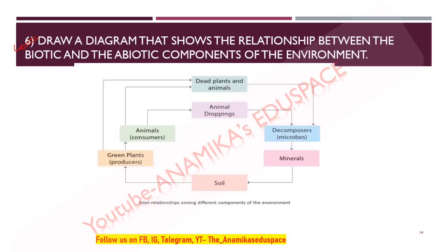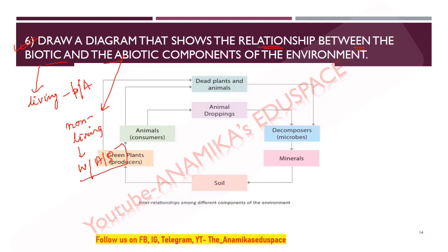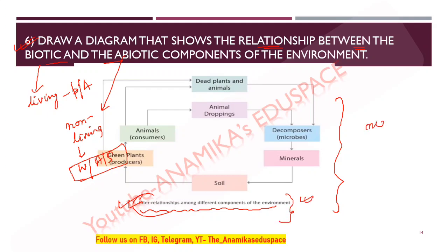The last question asks you to draw a diagram showing the relationship between biotic and abiotic components. Biotic components are living components — plants and animals. Abiotic components are non-living components — water, air, and sunlight. Refer to the diagram in the book and label it 'Interrelationships among different components of the environment.' Draw it neatly in your copy and in your exam to get good marks.